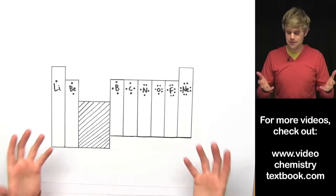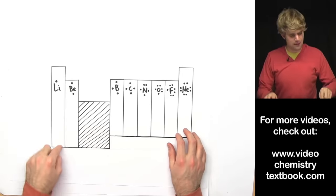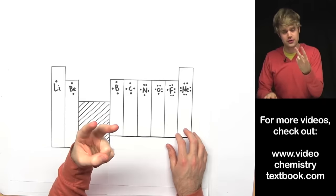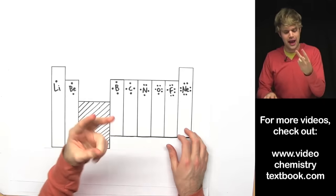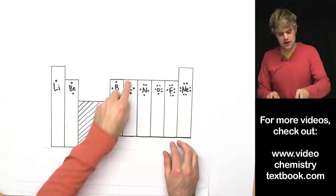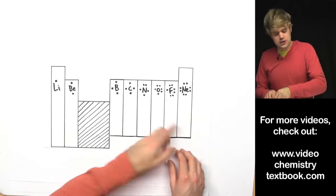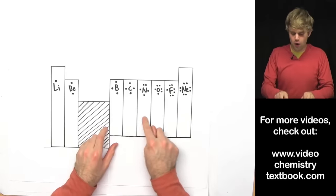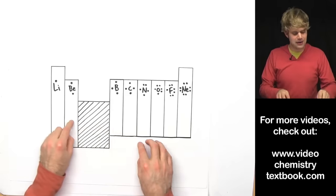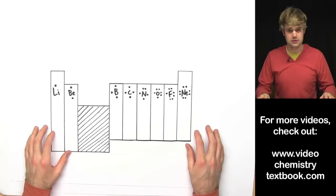So to summarize: every atom in the first column has one valence electron, every atom in the second column has two valence electrons, and then skipping the middle section we get three, four, five, six, seven, and eight valence electrons across the remaining columns. So if you know which column a particular atom is in, you can figure out how many valence electrons it has.